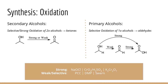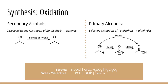For synthesis of carbonyls, we can oxidize alcohols. If we have a secondary alcohol, regardless of oxidizing agent strength, we'll get a ketone. For primary alcohols, we need to be careful: a strong oxidizing agent will go all the way to the carboxylic acid, whereas a weak oxidizing agent will give us our aldehyde. It's also worth noting that treating an aldehyde with a strong oxidizing agent will also give the carboxylic acid.